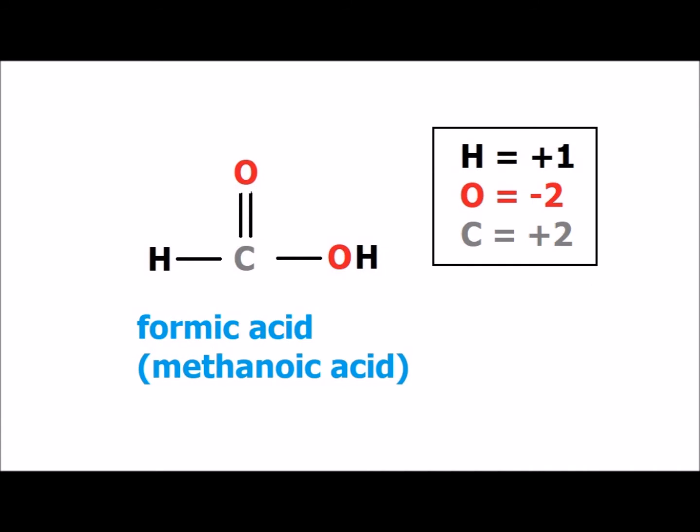Oxidation of an aldehyde leads to a carboxylic acid. The simplest carboxylic acid has the common name of formic acid, and its IUPAC name is methanoic acid. Recalling that the common oxidation number for hydrogen is plus 1 and for oxygen is minus 2, we can determine the oxidation number of carbon to be plus 2 in this carboxylic acid.